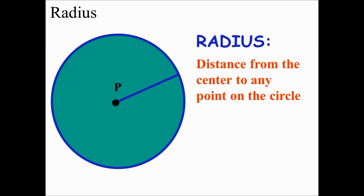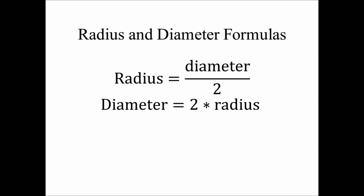The radius is the distance from the center of the circle to any point on the circle. Here are the radius and diameter formulas: the radius is equal to the diameter divided by 2, and the diameter is equal to 2 times the radius.